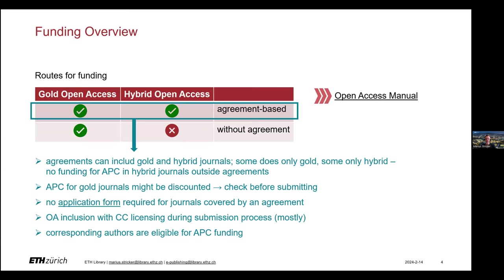There are two main routes for open access funding: the gold and the hybrid route. Our agreements can include gold and hybrid journals. However, some agreements only include hybrid journals and some others only gold. If an agreement exists, please check whether or not your journal is included in the agreement before submitting your paper.